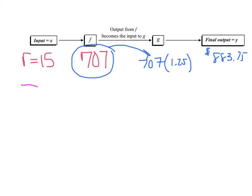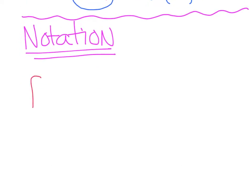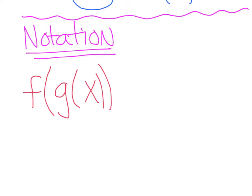Now let's talk about the notation we're going to use. We can write it one of two ways. This is read F of G of X — every time we see a parenthesis, we say the word 'of.' So F of G of X.